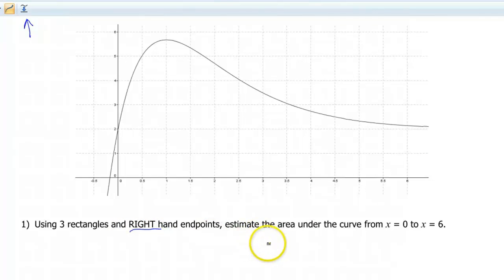We want to estimate the area under the curve from x equals 0 to x equals 6. So let's figure out what our delta x is, and that'll tell us the width of each of our rectangles. That's going to be b minus a over n, which is going to give us 6 minus 0 all over 3, which gives us 2.